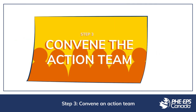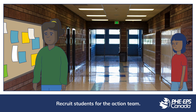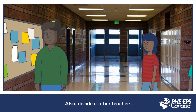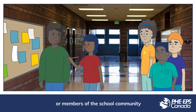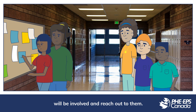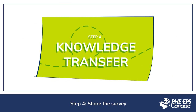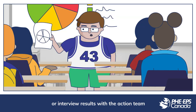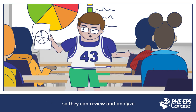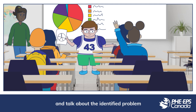Step 3: Convene an action team. Recruit students for the action team. Also, decide if other teachers or members of the school community will be involved and reach out to them. Step 4: Share the survey or interview results with the action team so they can review and analyze the information, discuss trends, and talk about the identified problem.